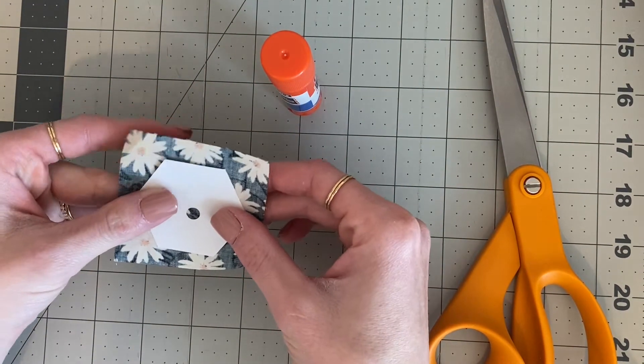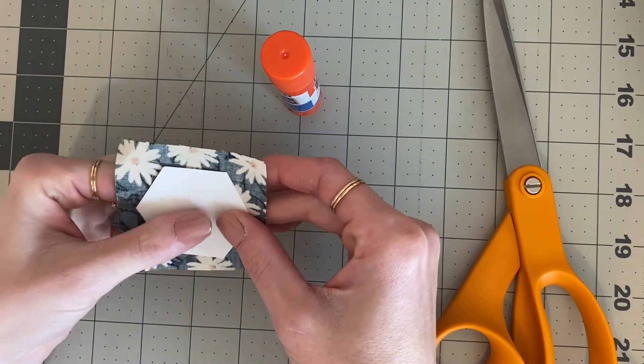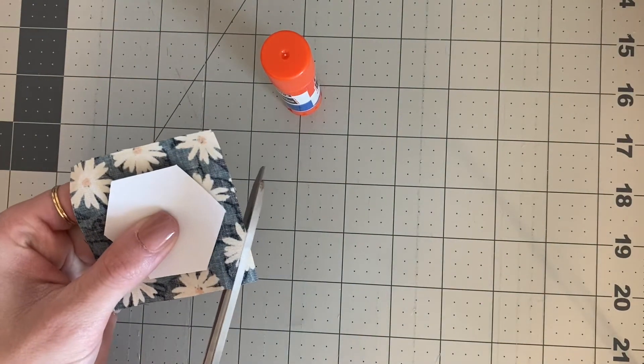Okay, so to start, place your fabric right side down, grab your hexi - you can pin this in place if you want - and just go ahead and trim all the way around your hexi.